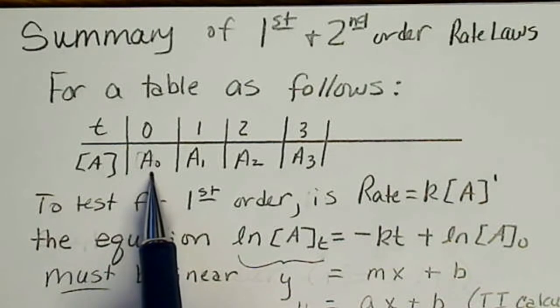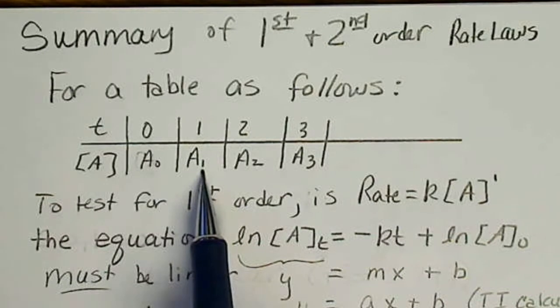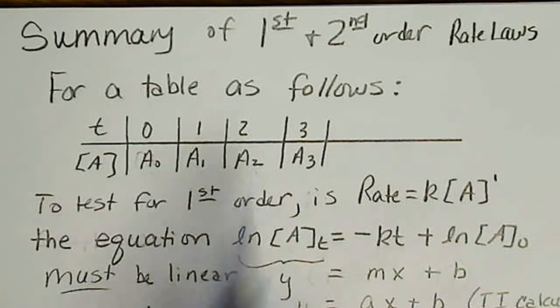So this would be A₀, the initial concentration, and after one second this would be the concentration, after two seconds that would be the concentration.